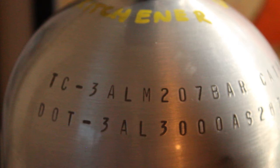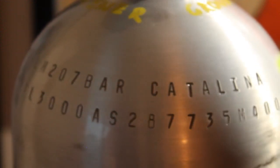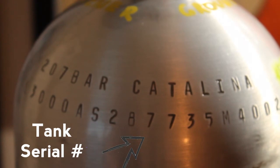So the next bit of information past the 3000 is a series of letters and numbers. This particular one is AS287735. What this bit of information is, is this is essentially the name of your tank.